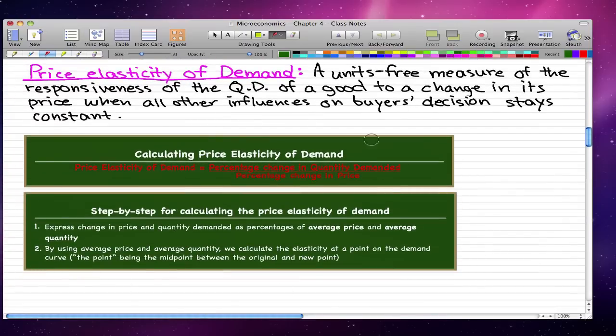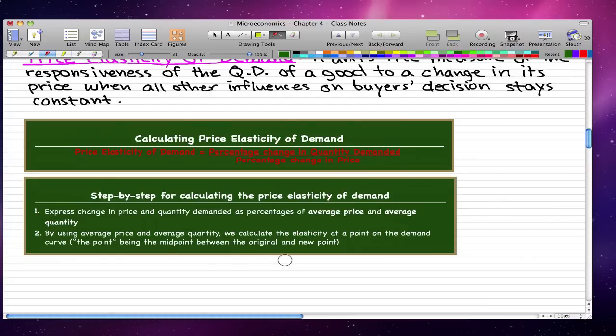You can see that I have here calculating price elasticity of demand. The price elasticity of demand formula is the percentage change in quantity demanded over the percentage change in price. The step by step for calculating price elasticity of demand: First, we have to express the change in price and quantity demanded as percentages of average price and average quantity. The average price being the average of the initial and new price, and the average quantity being the average of the initial and new quantity. By using the average price and average quantity, we can calculate the elasticity at a point on the demand curve, and this point is the midpoint between the original and the new point.